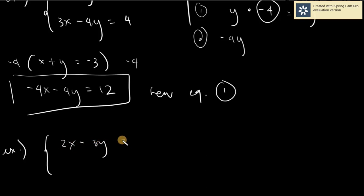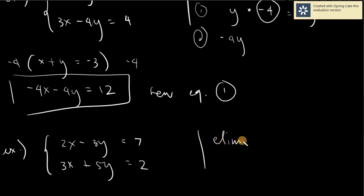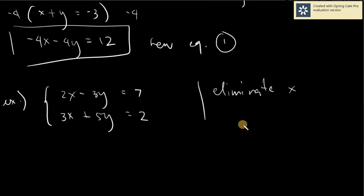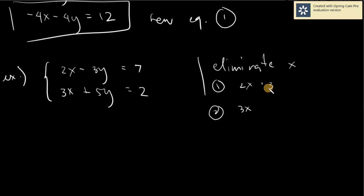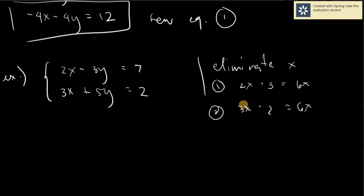Another example: 2x minus 3y equals 7, and 3x plus 5y equals 2. You are being asked to eliminate x. In this case, we have 2x and 3x. Your goal is to make them the same so you can eliminate them both. One thing to do is simply multiply the coefficients together: 2 times 3 equals 6, so we want 6x. I multiply equation 1 by 3 to get 6x, and multiply equation 2 by 2 to also get 6x.